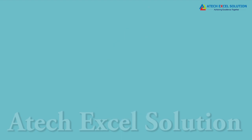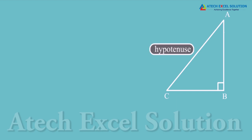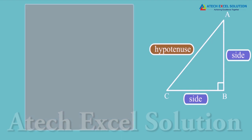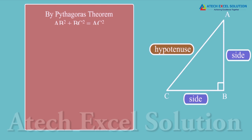Consider a triangle ABC right angled at B. We have AC as the hypotenuse and AB and BC as the sides. From Pythagoras' theorem, AB² + BC² = AC². Upon dividing each term by AC² we get: